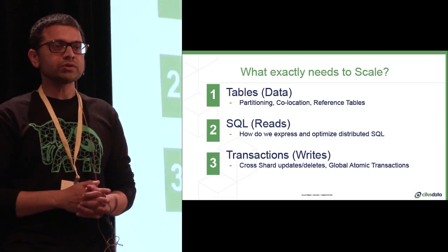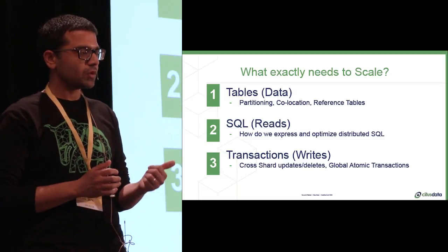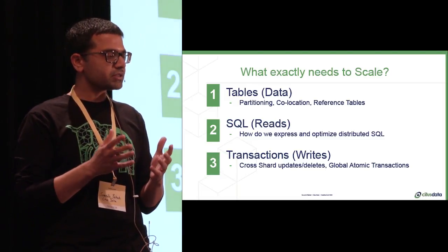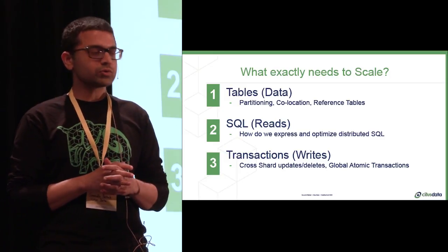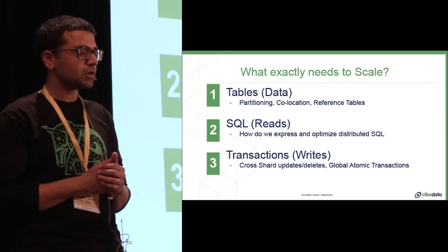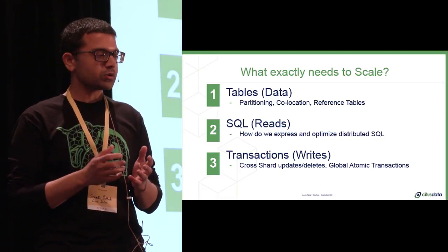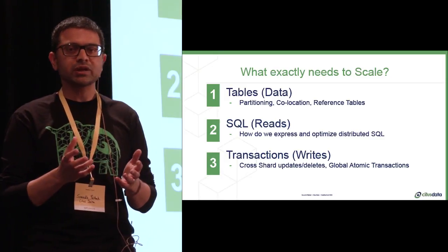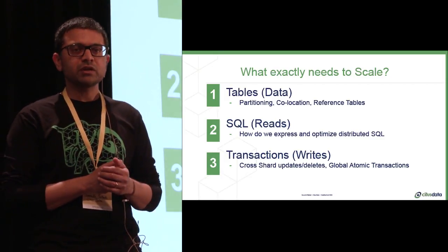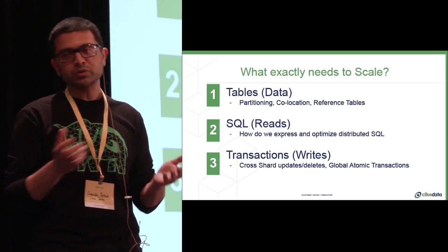So what do we need to consider when we're talking about scaling relational databases? One, how do we take a table, partition that, and actually maintain some of the relational semantics that we're all used to? For example, indexes, constraints, foreign keys. Once we've distributed our data, how do we run SQL across it, especially when the SQL can be fairly advanced? And finally, how do we solve some of the heavy problems of running transactions across nodes, especially when nodes can fail?